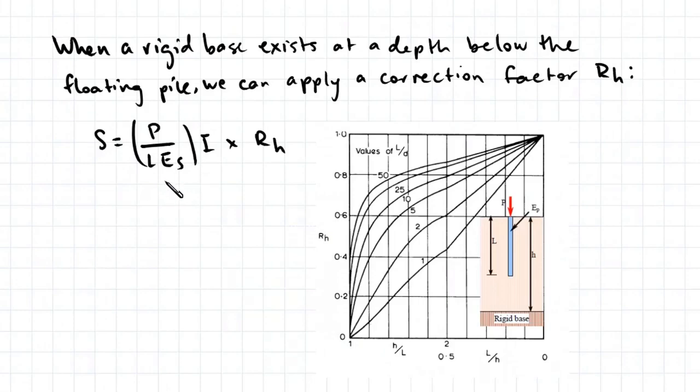When a rigid base exists at a certain depth below the floating pile, we can also apply a correction factor RH, which can be found using this chart here.